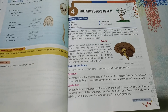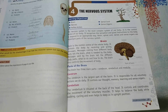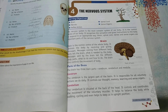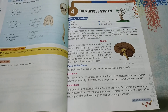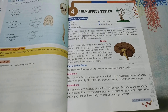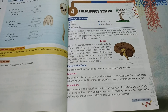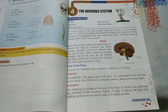Brain ke baare mein baat karte hain. Brain human body ka CPU hota hai, jaisa ki computer ka CPU hota hai, waise hi human body ka CPU kya hota hai? Brain — jis se sab kuch chalta hai. Poori body ko control karta hai — messages aate hain, jaate hain. Saari chizein brain se hi chalti hain. What to do and how to do, kya cheez kab karna hai, kaisa karna hai — yeh saari chizein brain decide karta hai. Movement of body bhi control karta hai: ki body kab chalegi, kab rukegi, kab baithegi, kab khadi hogi, kab leti ghi.